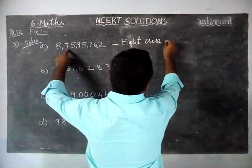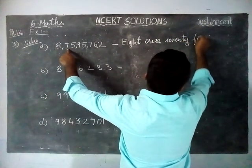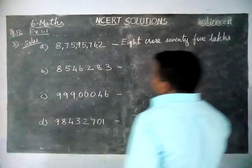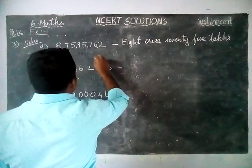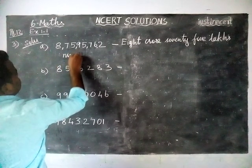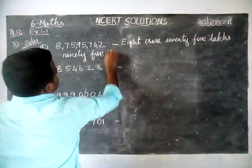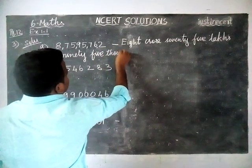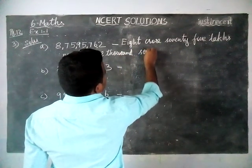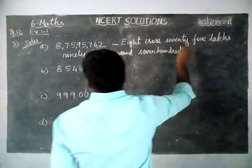Eight crores, seventy-five lakhs, ninety-five thousand, seven hundred sixty-two.